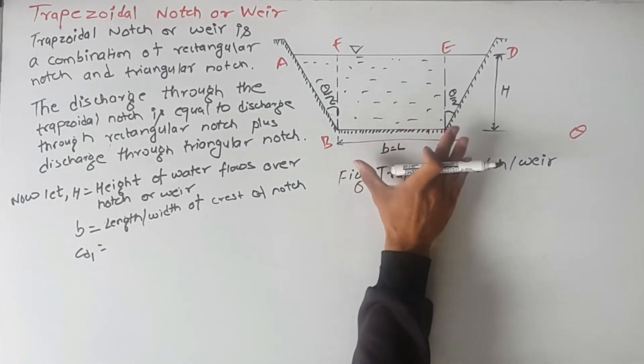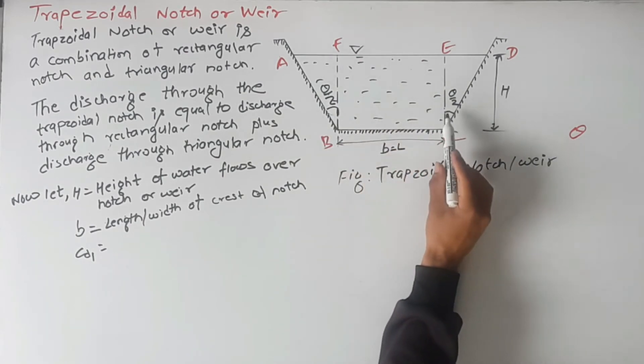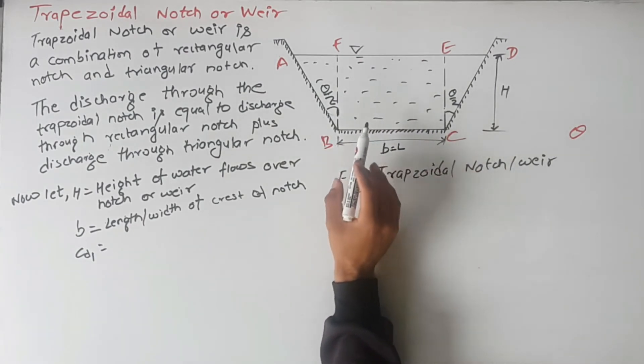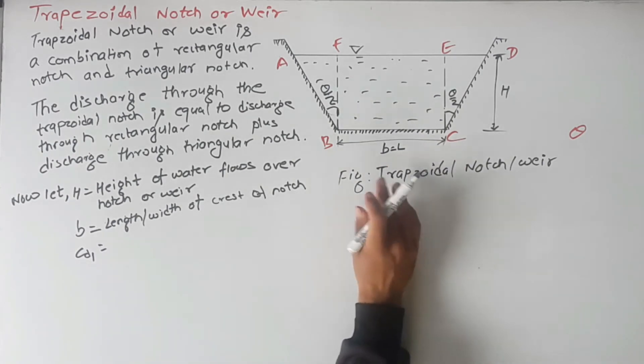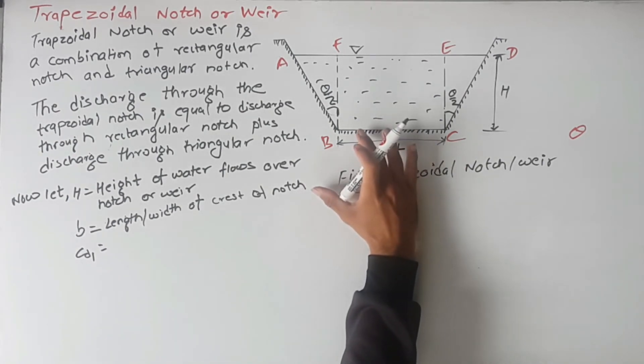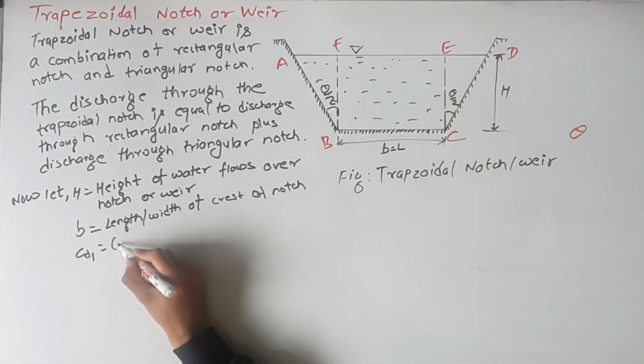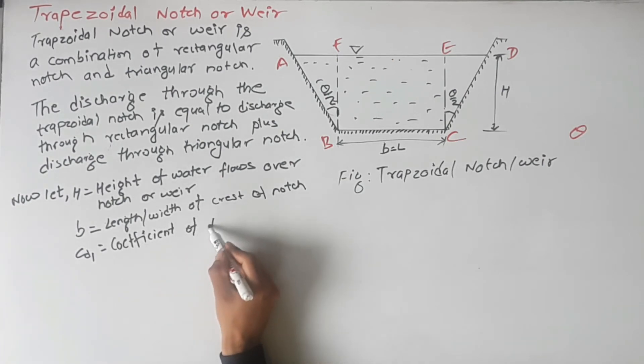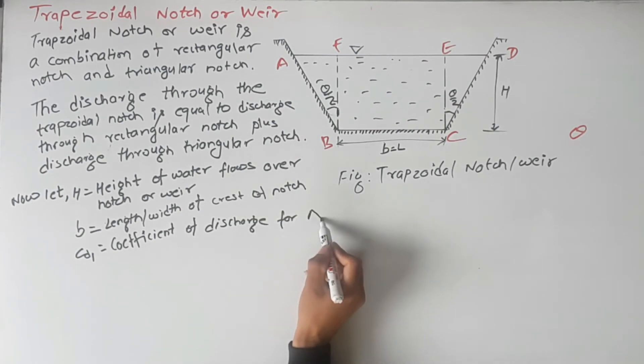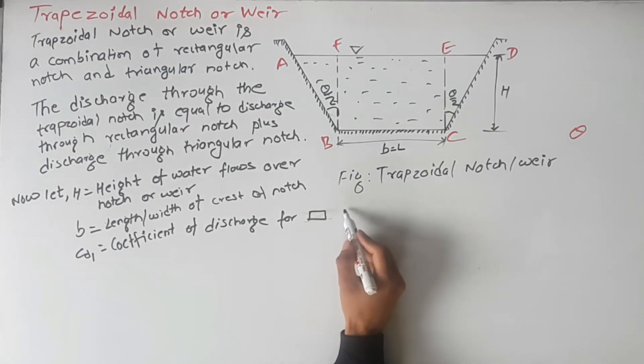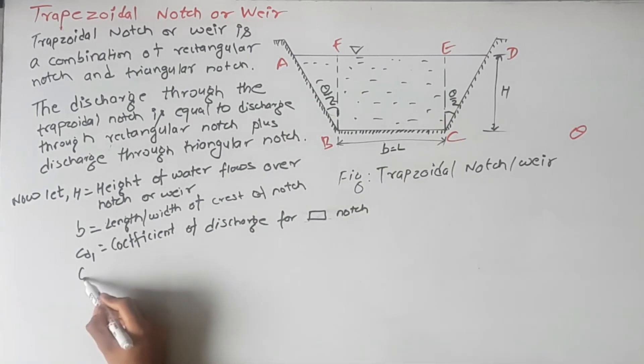As this trapezoidal notch is composed of rectangular and triangular notch, we have two discharge coefficients. CD1 is the discharge coefficient for rectangular notch and CD2 is the discharge coefficient for triangular notch.